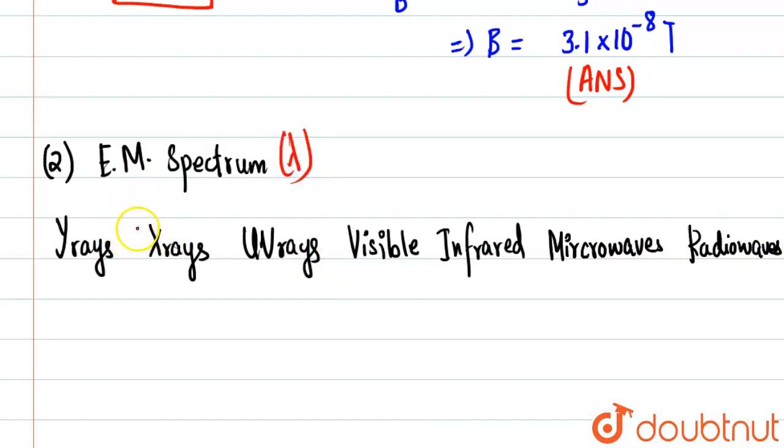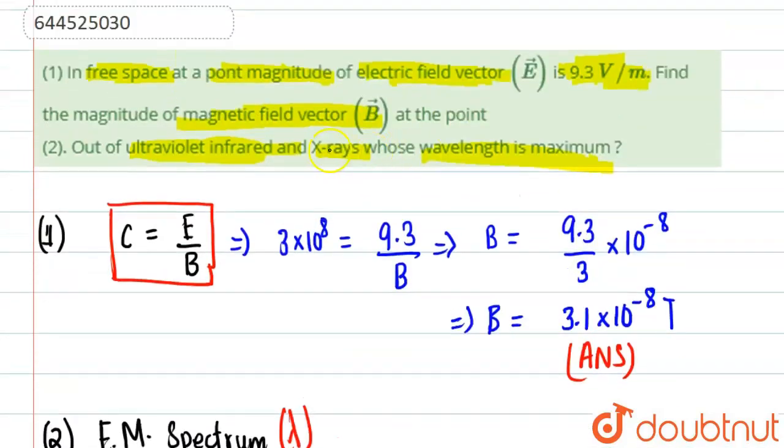The smallest is of gamma waves and largest is of radio waves. So basically, what we need to compare is X-rays, infrared and ultraviolet, which has maximum wavelength.